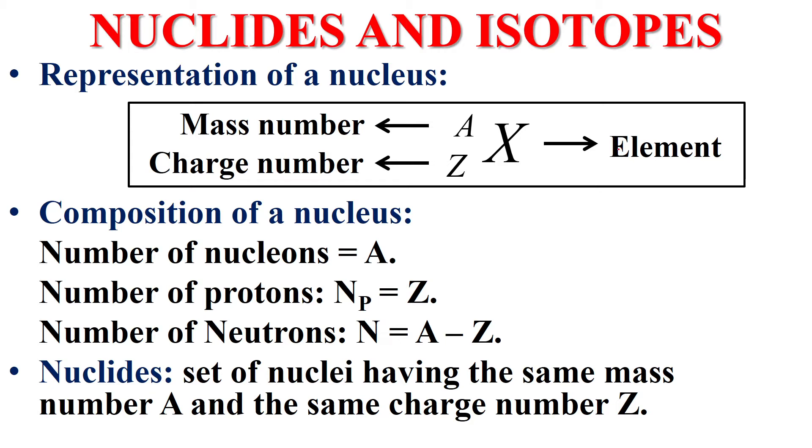The element can be oxygen, carbon, nitrogen, etc. The number below the nucleus is called charge number. The number above A is called mass number.